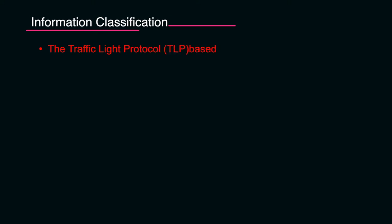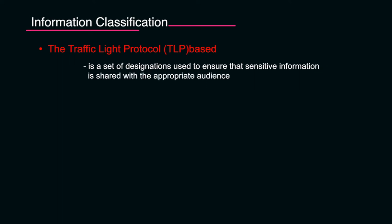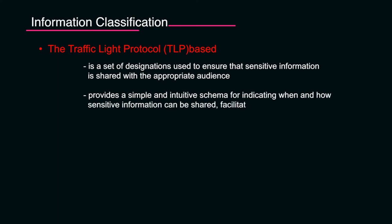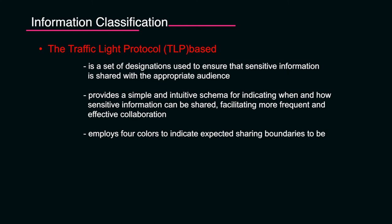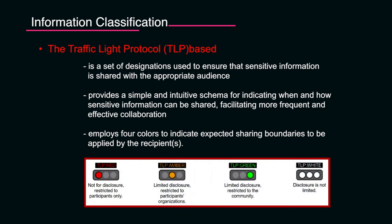An information classification protocol used by CSIRTs globally is the Traffic Light Protocol (TLP). It is used to ensure that sensitive information is shared with the appropriate audience only. It provides a simple and intuitive schema for indicating when and how sensitive information can be shared. Four colors indicate expected sharing boundaries: TLP Red, TLP Amber, TLP Green, and TLP White. TLP White means disclosure is not limited — the information can be shared over the public domain or is available for public consumption.